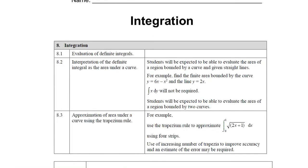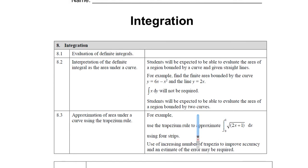So, integration for Pure 2. As you can see, we have three different objectives in the spec. What's really good with this is, even though I'm going to show you how to do all of this and recap this, I'm also going to show you how to double check this in your calculator — especially those of you who've got the ClassWiz white calculator, we can actually put the integration on there. So, let's get started.